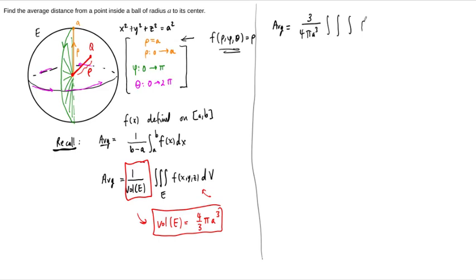And then we need to integrate our function, so that's just f of rho phi theta equals rho, times dv, but remember that the spherical volume element is another rho squared, sine of phi, d rho, d phi, d theta. This whole portion here at the end, this is just the spherical volume element, dv.